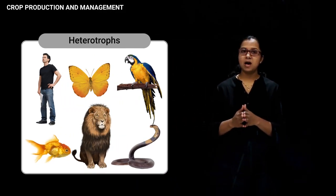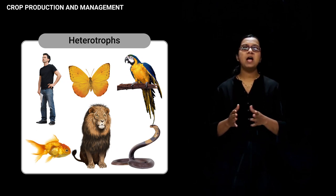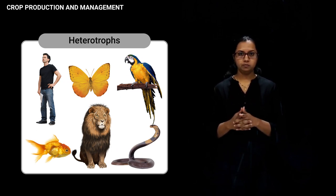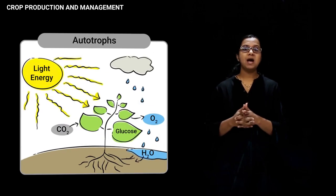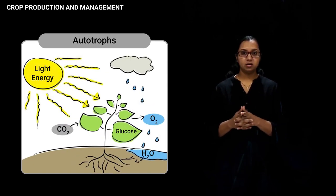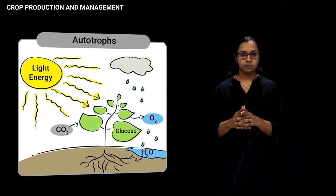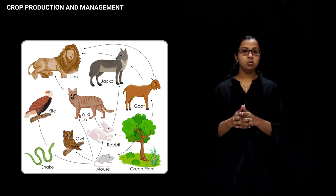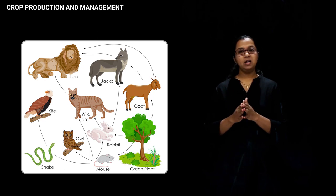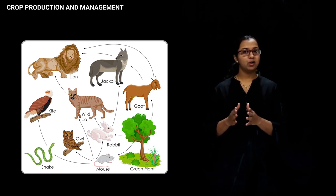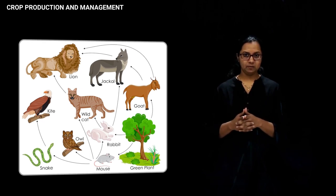Human beings including all animals are heterotrophs, which means we cannot synthesize our own food. On the other hand, plants are autotrophic in nature. They can synthesize their own food by capturing sunlight and converting it into organic food. So, we can say that human beings and animals are either directly or indirectly dependent on plants for their food and energy requirement.